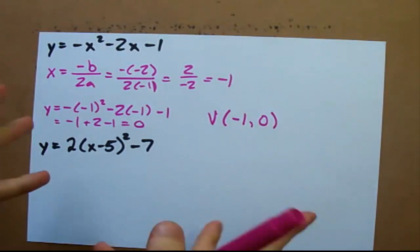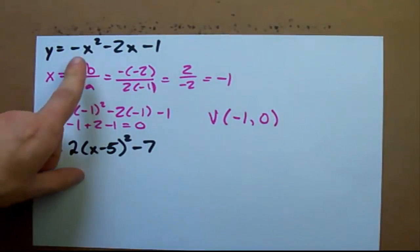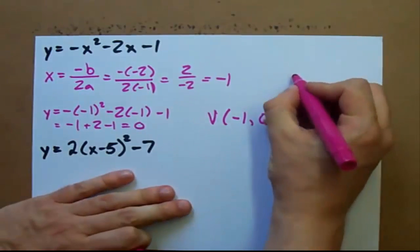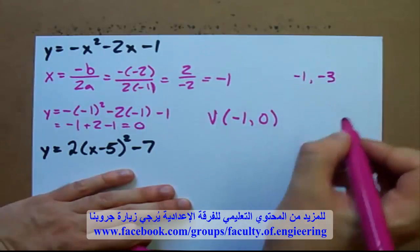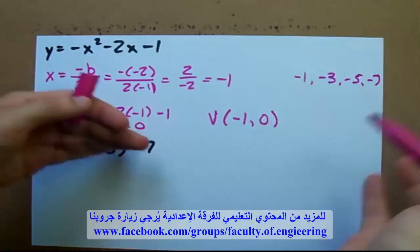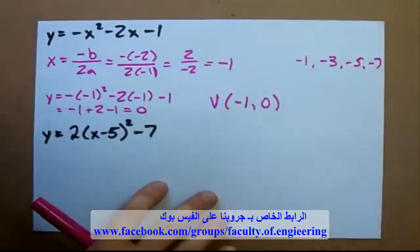But my step pattern, which is normally 1, 3, 5, 7, we have to multiply by the number in front of x squared: negative 1. So negative 1, negative 3, negative 5, negative 7, and on and on. Let me show you how that manifests itself.